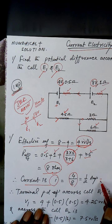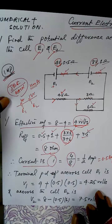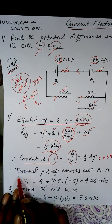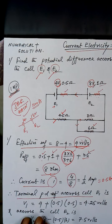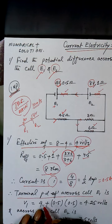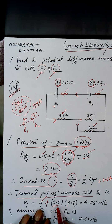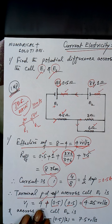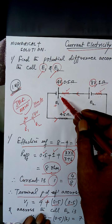The parallel combination of 3 and 6Ω is in series with 0.5Ω, 1Ω, and 4.5Ω. So the total R_effective is 0.5 + 1 + 2 + 4.5. The effective EMF is 4V, so the current I = total voltage / R_effective = 0.5 ampere.